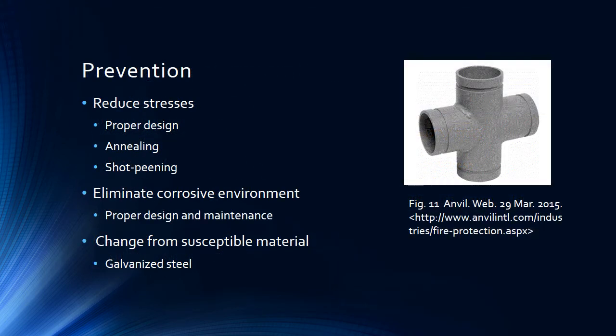There are multiple ways that environmentally assisted cracking in fire sprinkler systems can be eliminated. One is to reduce the stresses, and that can be done a number of ways. First, through proper design. Secondly, annealing or heat treating the pipe. Third, by introducing a compressive stress along the surface of the pipe through shot peening.